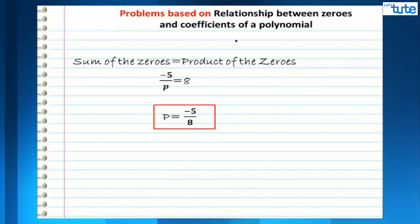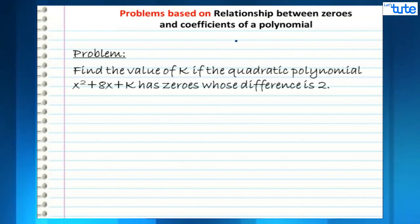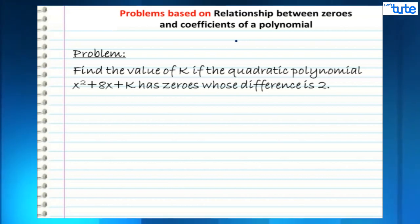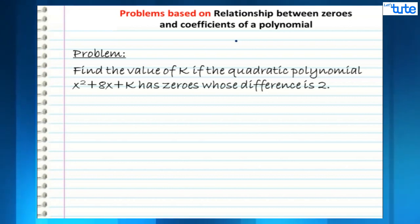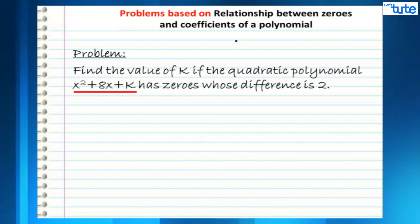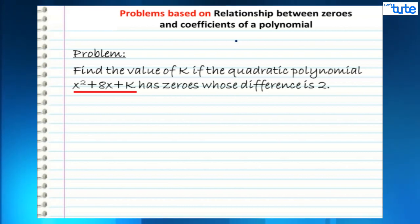Let's move on to the next question. It says: find the value of k if the quadratic polynomial x² + 8x + k has zeros whose difference is 2.